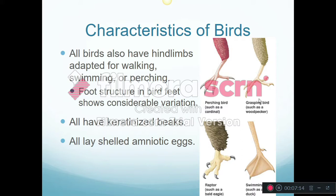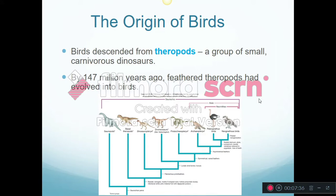All birds are going to lay shelled amniotic eggs — no birds give live birth. Some snakes give live birth, some snakes lay eggs, but all birds lay eggs. Birds descended from theropods, which were small carnivorous dinosaurs. This happened at least by 147 million years ago. Dinosaurs went extinct 65 million years ago, so birds and the rest of the dinosaurs co-existed for quite some time.